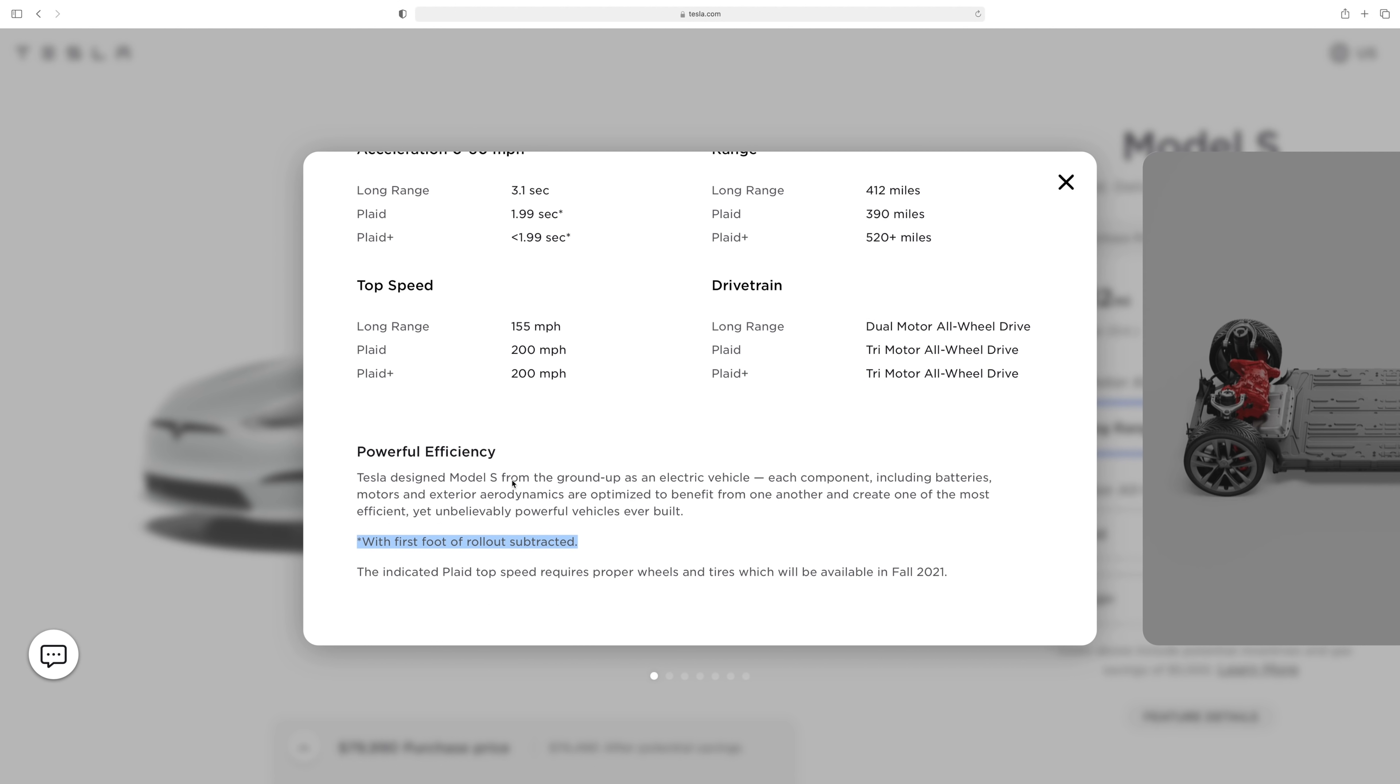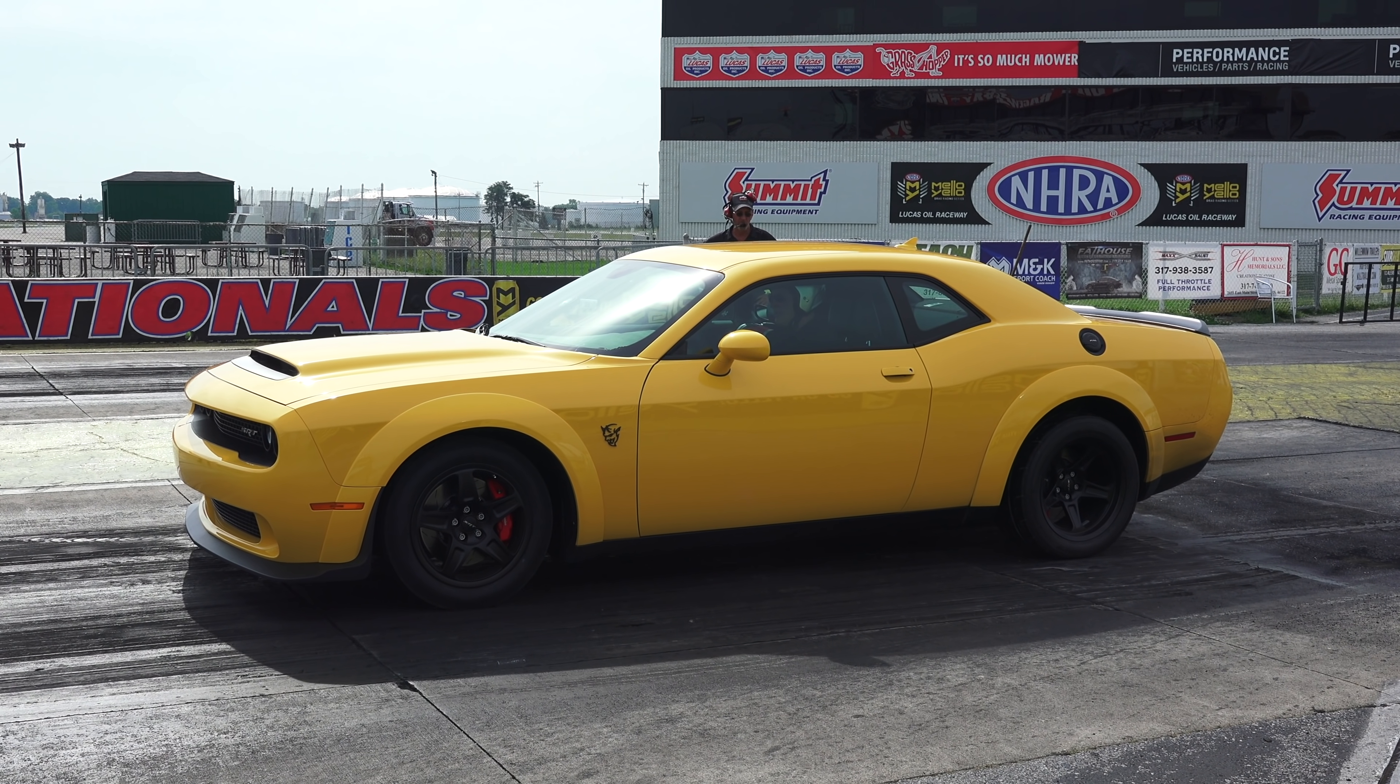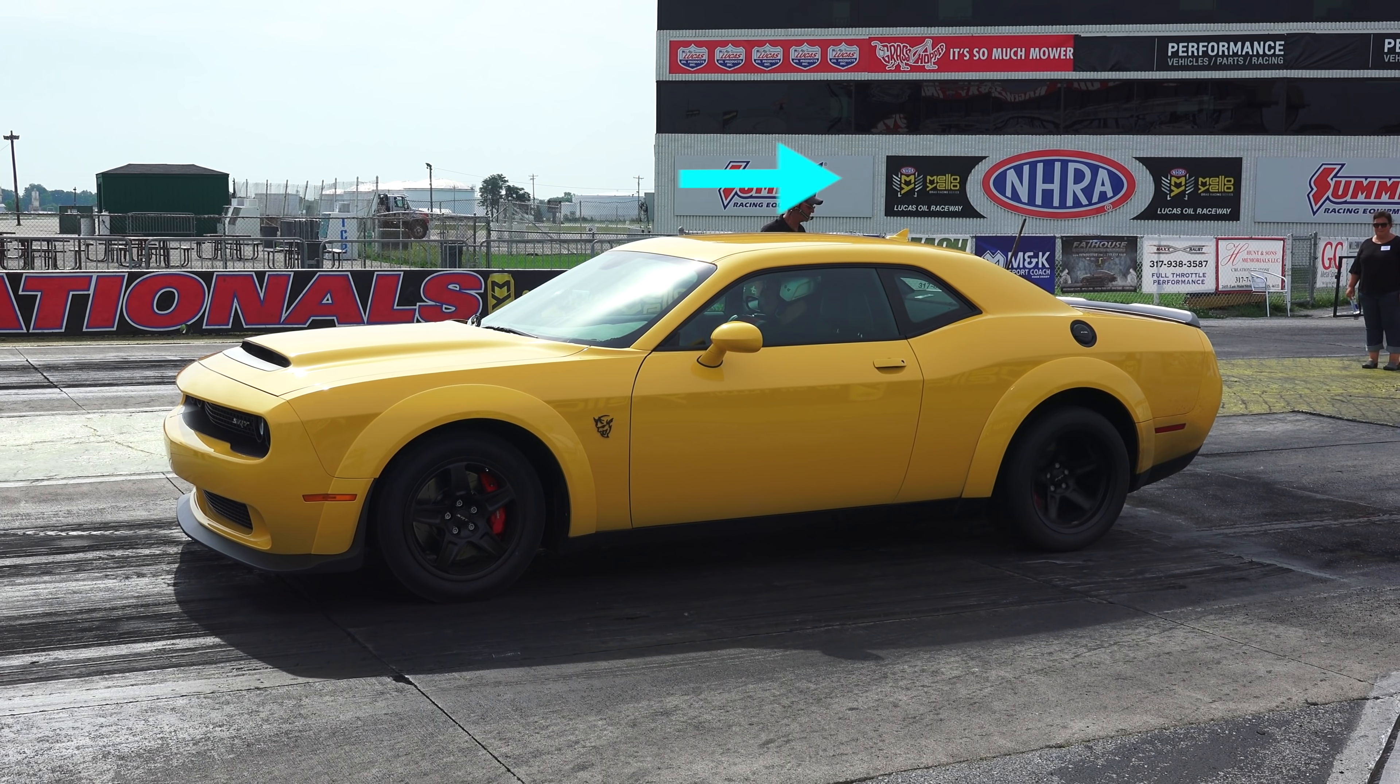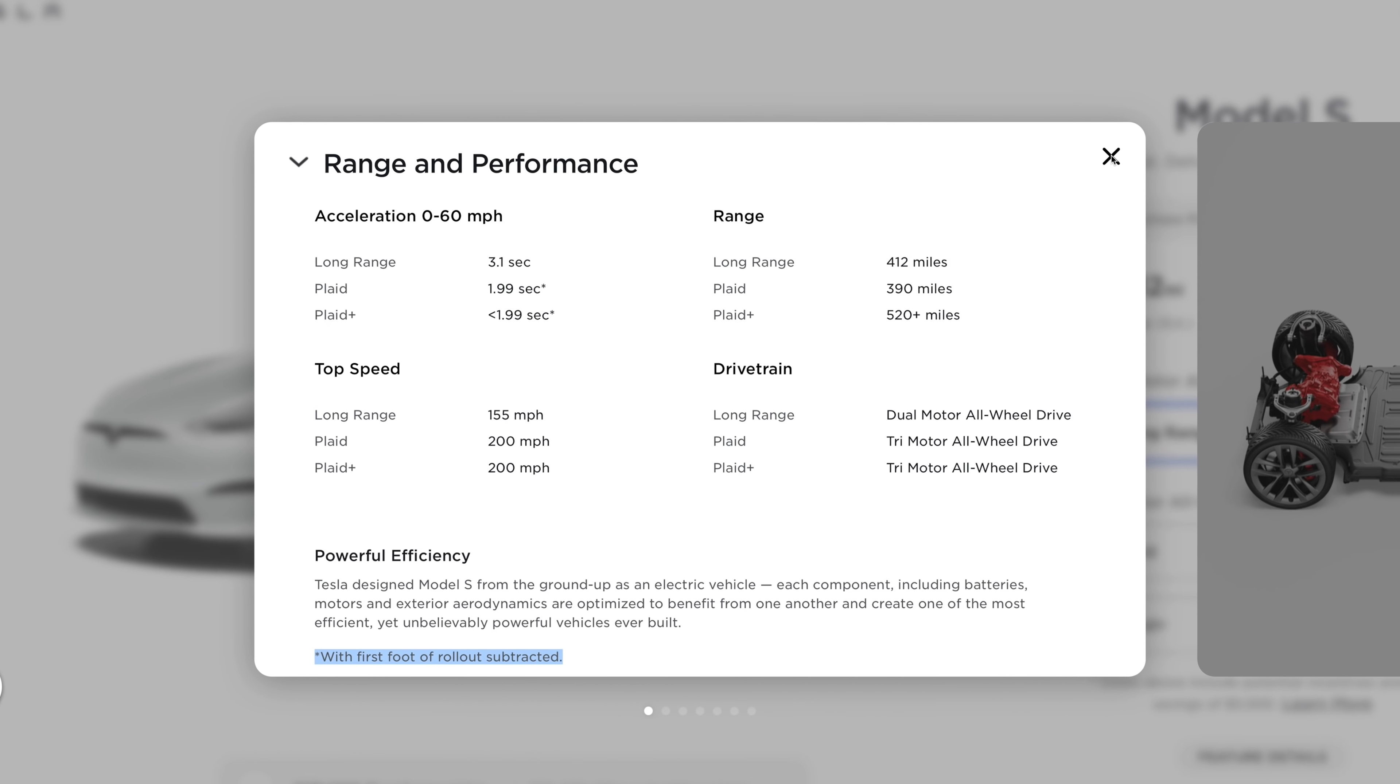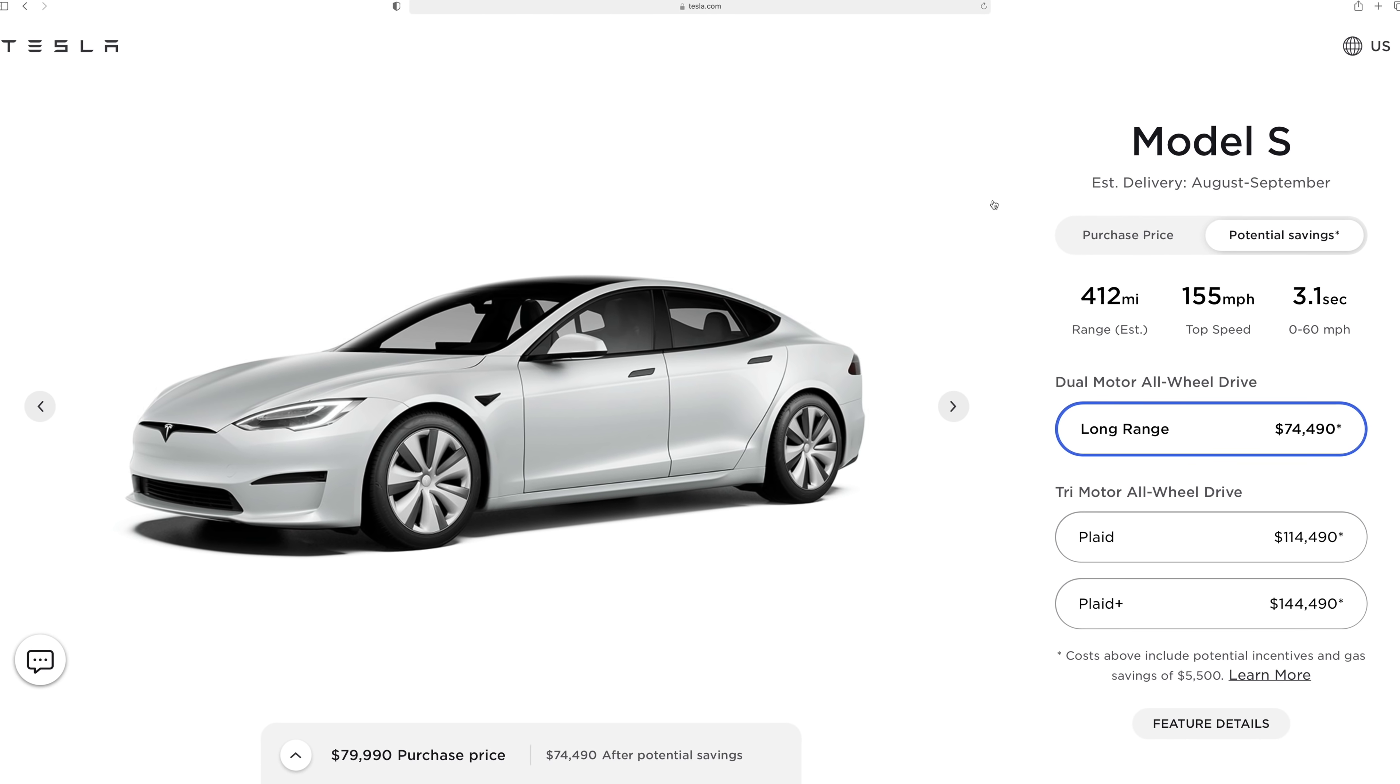I have three problems with this. First off, most people don't know what rollout is. And that's totally fine. Why should the masses know about some drag racing measurement method used by the National Hot Rod Association, or NHRA? The second problem, I think it's quite deceiving how hidden this information is. It should be shown on the main purchase page.